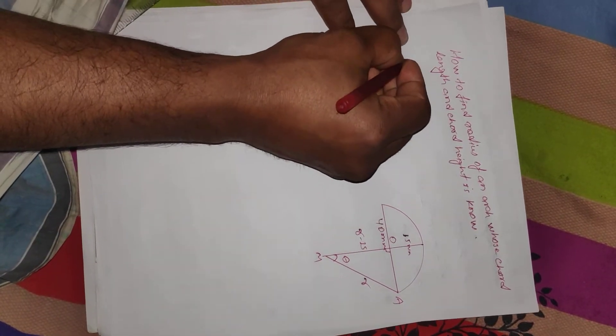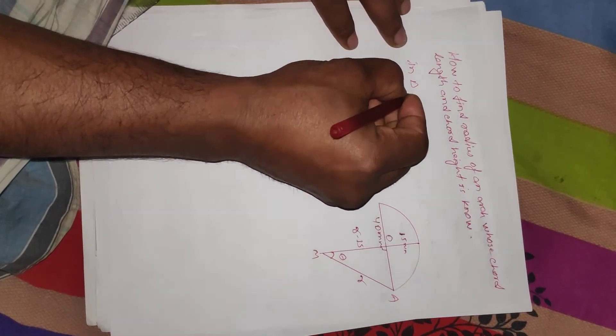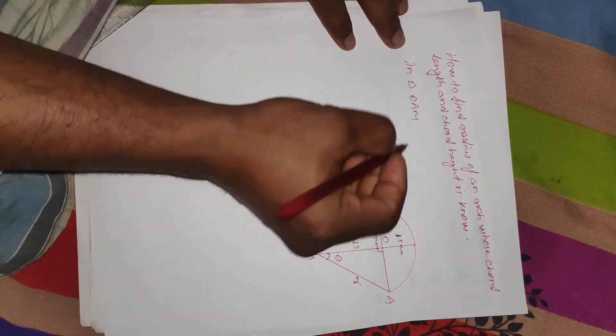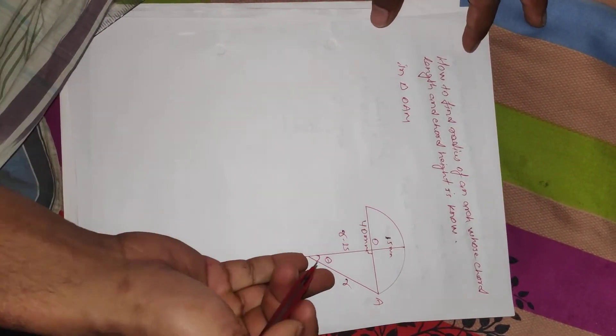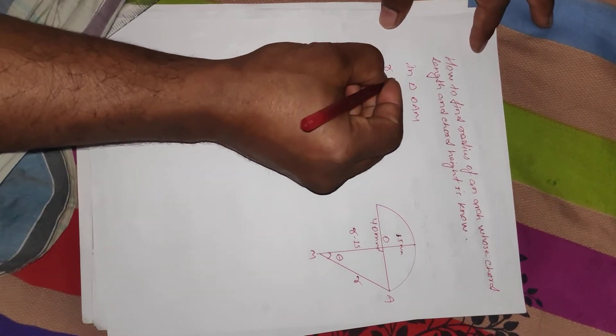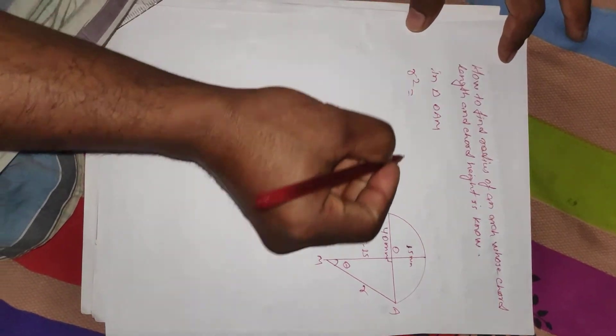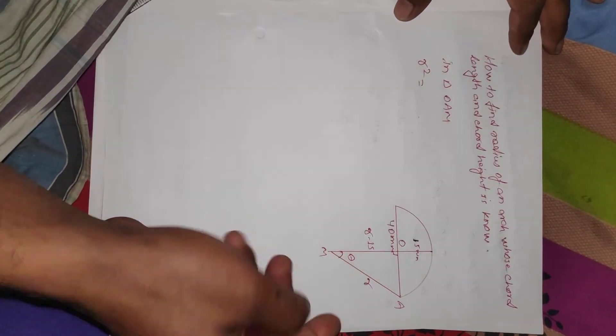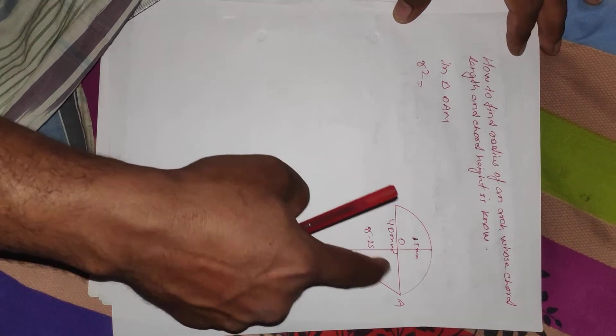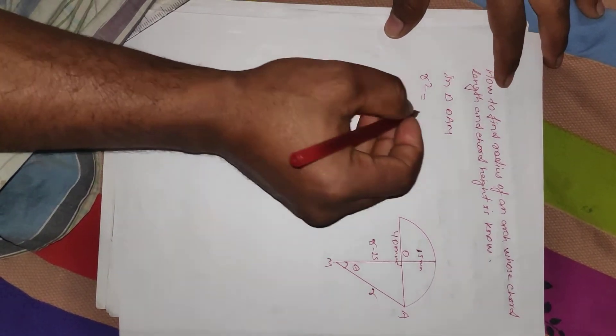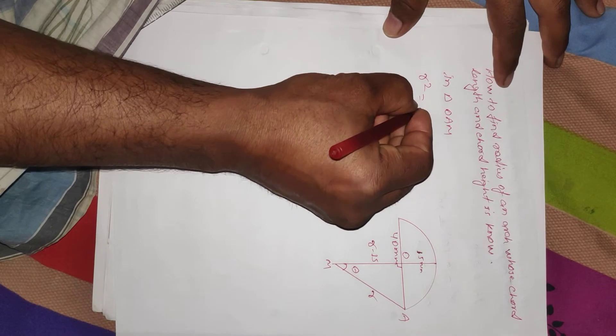In triangle OAM, hypotenuse which is R, R square will be equal to base square plus perpendicular square. Base is R minus 15.